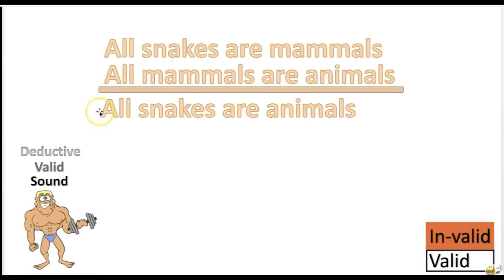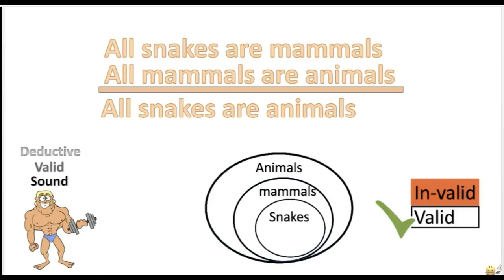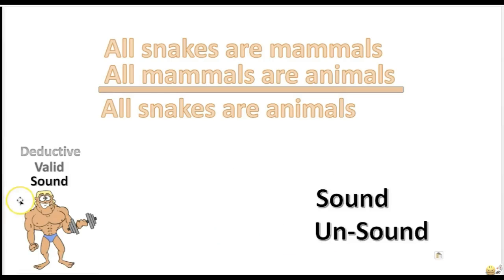Listen to this argument: 'All snakes are mammals. All mammals are animals. Therefore, all snakes are animals.' Is this argument valid or invalid? It's valid — if you assume that the premises are true, then the conclusion has to be true. Is this argument sound or unsound? It's unsound. The argument is valid, but the first premise is false, so the argument is unsound.